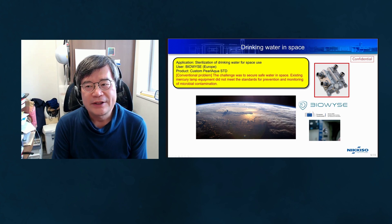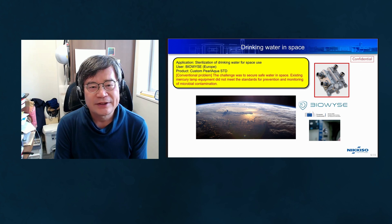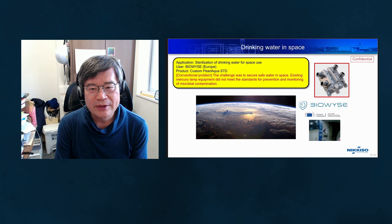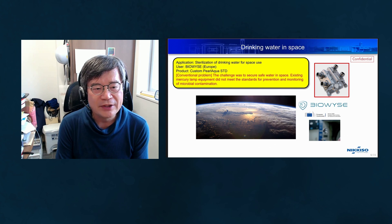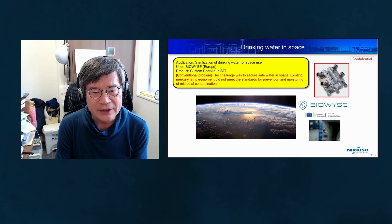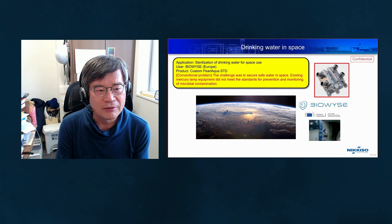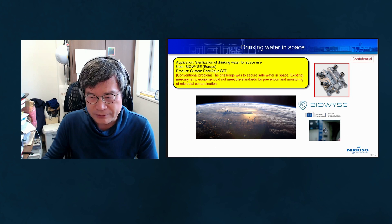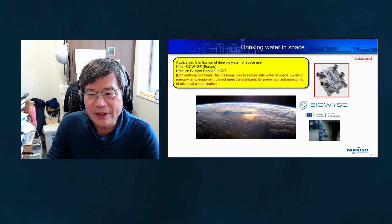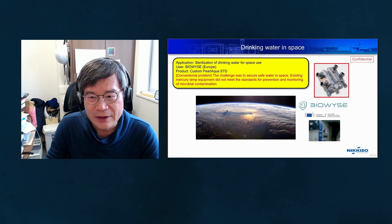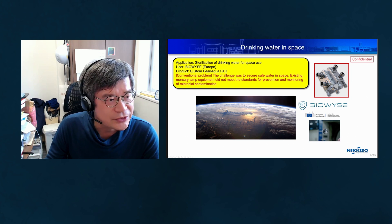This can also be used in space. The challenge is securing safe water in space. Existing mercury lamp equipment did not meet standards for prevention and monitoring of microbial contamination. This deep UV LED system is very promising for space applications.